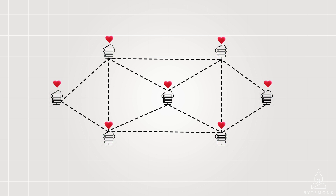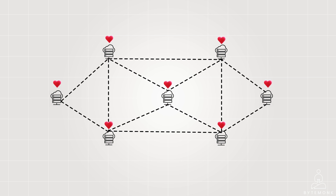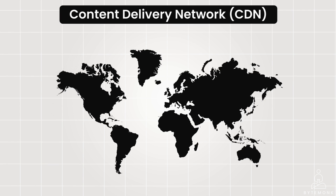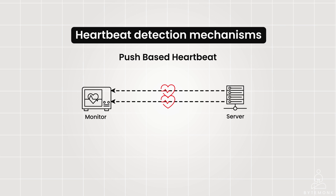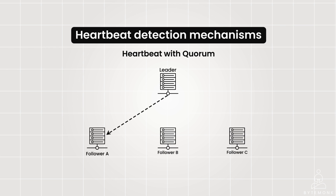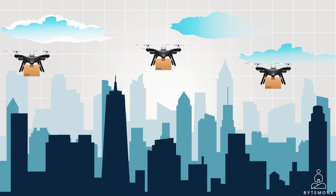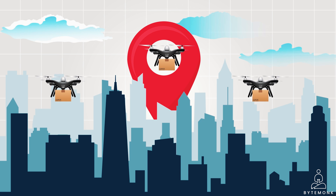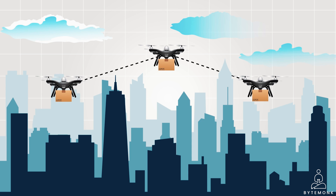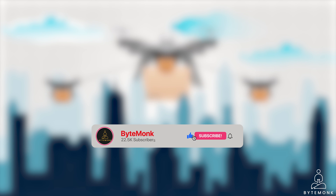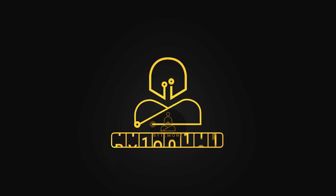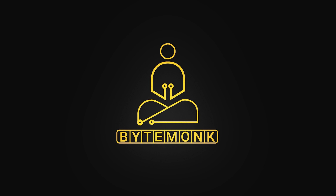Heartbeats are a fundamental mechanism for monitoring the health and availability of resources in a distributed environment. In this video, we will dive into the world of heartbeats in computers — we will explore how heartbeats work, how they are used to detect problems, some of the common heartbeat detection mechanisms, and discuss their implications with real-world examples, which will solidify your understanding and appreciation of heartbeats in system design.